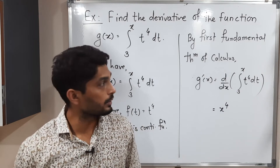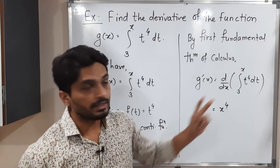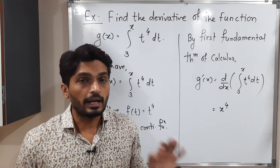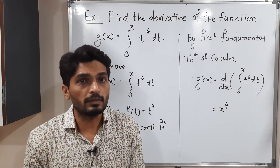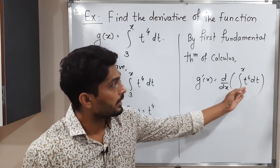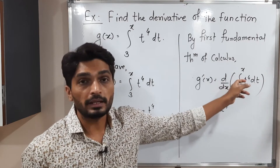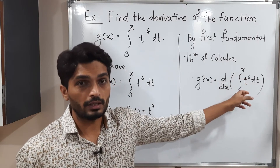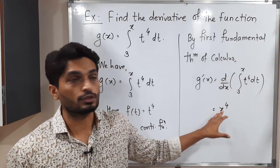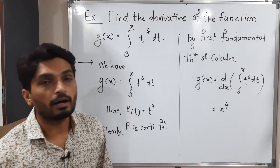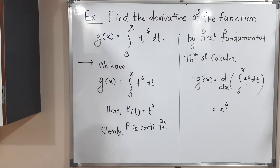What we are doing here: integration and derivative get cancelled, and we simply put t equal to the upper limit x inside the function. So the value of g dash of x is x raised to 4. Make a screenshot of this, then we will discuss one more example.